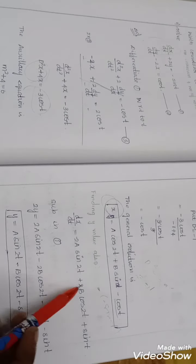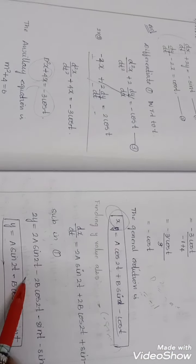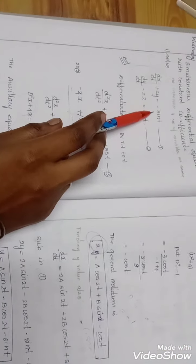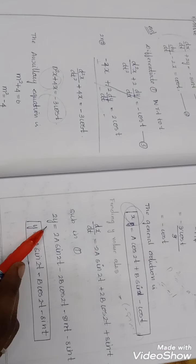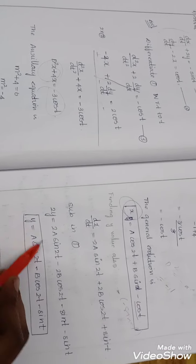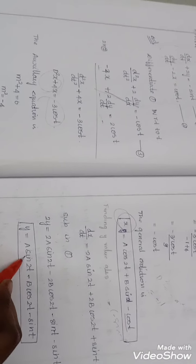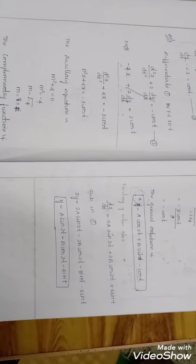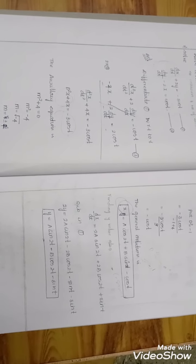After substitution and simplification, multiplying through by 1/2, we get: y = A·sin(2t) - B·cos(2t) - sin(t). This is the complete solution for the simultaneous differential equation. We have found both x and y values. Hope you all understand, thank you for watching. Keep supporting.